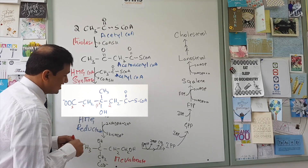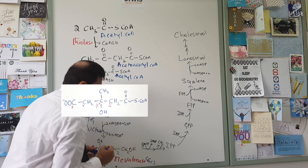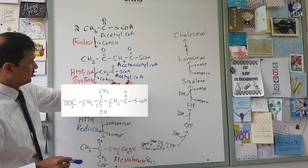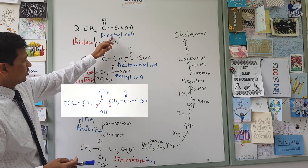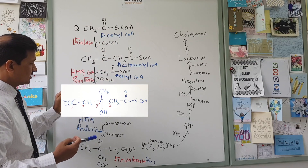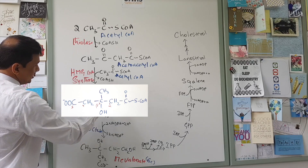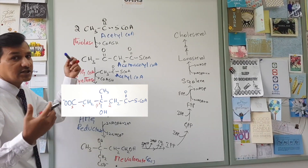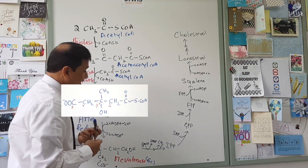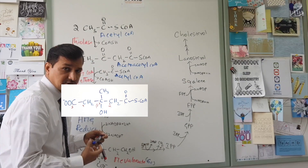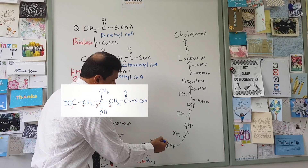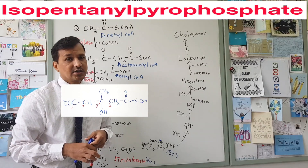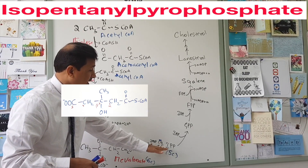Once you get mevalonate — a 6-carbon molecule — so that accounts for 3 acetyl-CoAs: two condense to make acetoacetyl-CoA, and one more joins in, giving 6 carbons total. Mevalonate then undergoes phosphorylation and decarboxylation; one CO₂ is released, yielding a 5-carbon molecule called isopentenyl pyrophosphate (IPP).